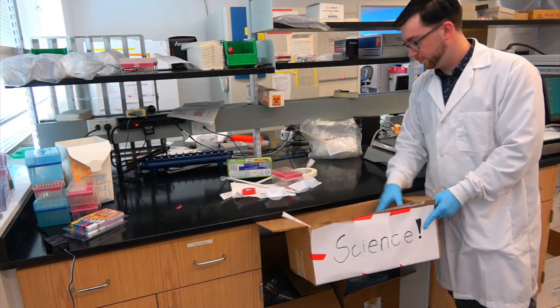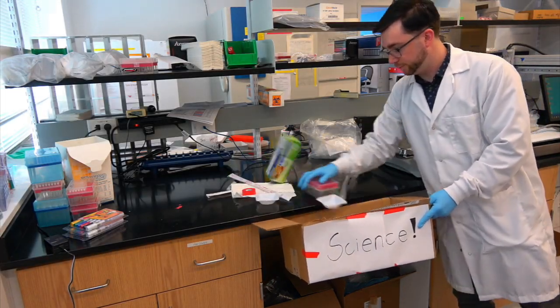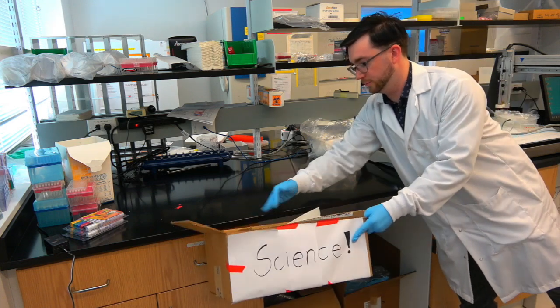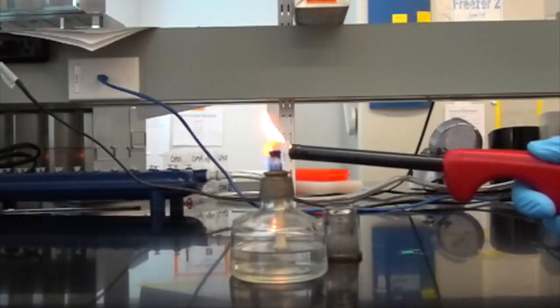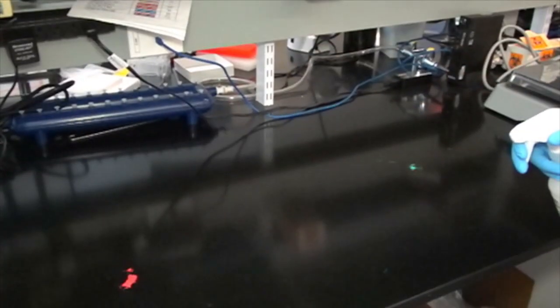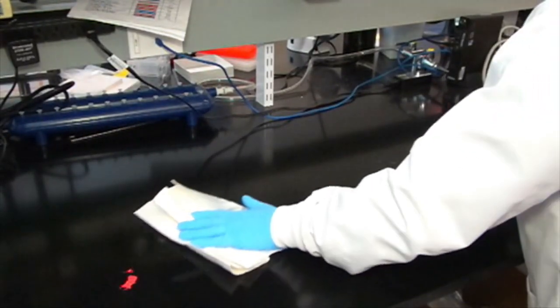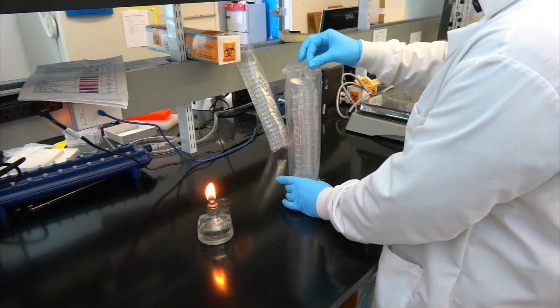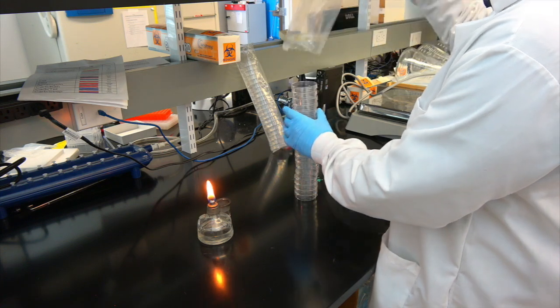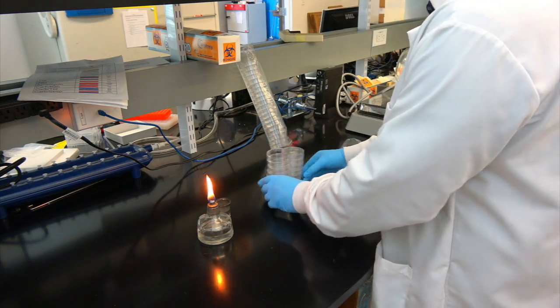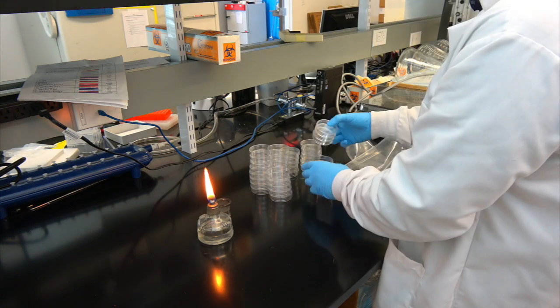While the LB agar is sterilizing in the autoclave, we will prepare our bench for plate pouring. First, we find or make an empty section of bench with a working flame. Then we spray down the bench with 70% ethanol and wipe it with a paper towel. Once the bench is clean, we count out the appropriate number of plates and leave them stacked in an easily accessible location. Be careful not to stack them too high, lest we have an architectural disaster.